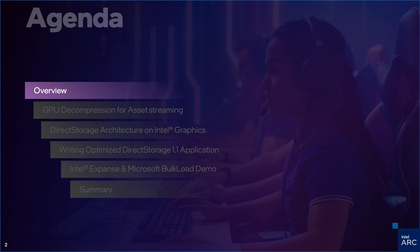We'll start with a brief overview by discussing its features and benefits. Next, we'll delve into one of the biggest improvements in Direct Storage 1.1: GPU decompression for asset streaming. We'll explore how this new feature can improve your application's performance. Following that, we'll review the architecture on Intel graphics and examine best practices for writing an optimized Direct Storage application. We'll discuss the key elements to keep in mind to ensure your application runs smoothly and efficiently. Lastly, we'll look at Intel's Expanse and Microsoft's Bulk Load demo, which demonstrates the capabilities of Direct Storage 1.1 in action. This will provide a hands-on opportunity to see how Direct Storage 1.1 can benefit your projects. So let's get started and explore the exciting world of Direct Storage 1.1.